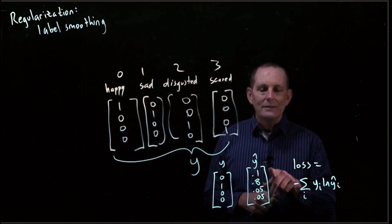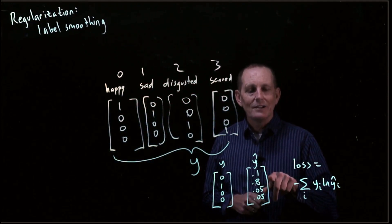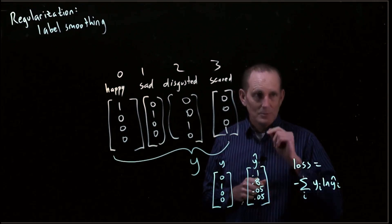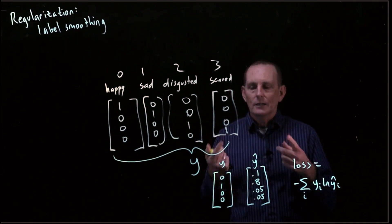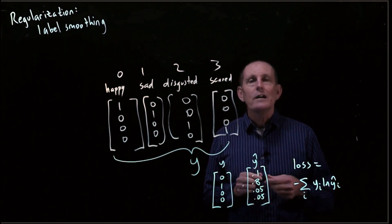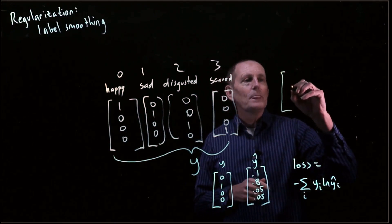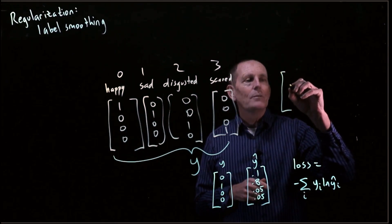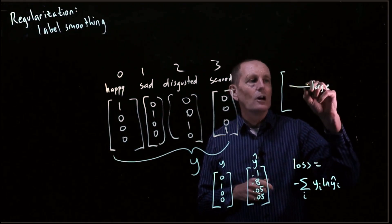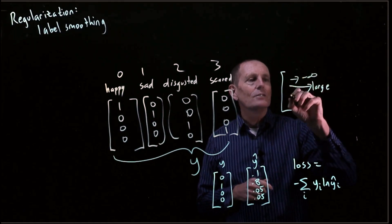We can never get a y-hat that is 0, 1, 0, 0. The closest we can get is some small epsilon from 1, and small epsilon for the other positions. Continually training with this training example is going to drive our f to produce bigger and bigger second values, while the others become large towards negative infinity.